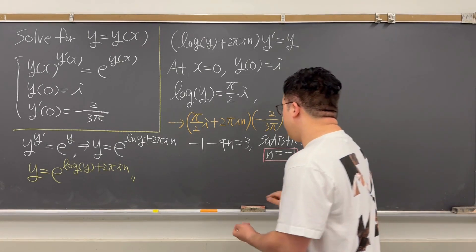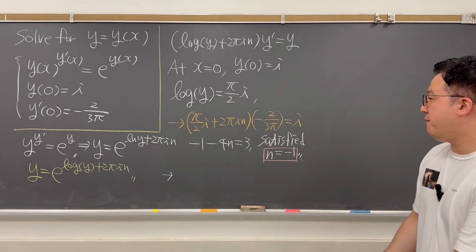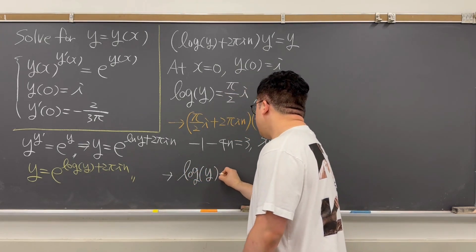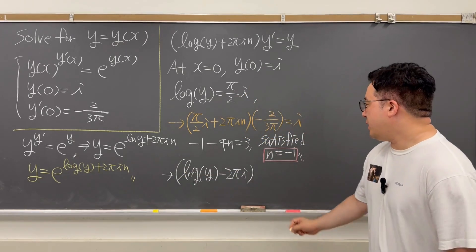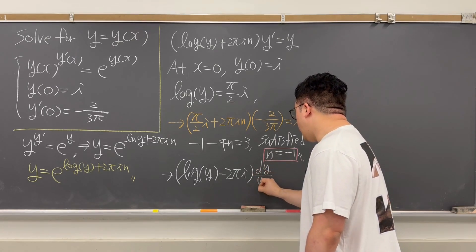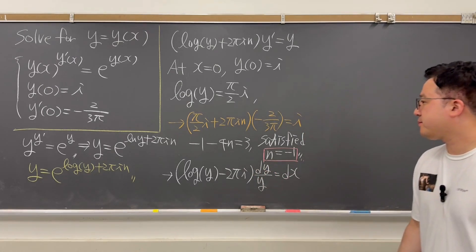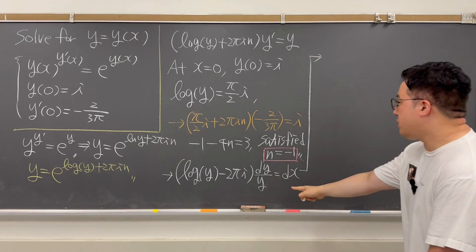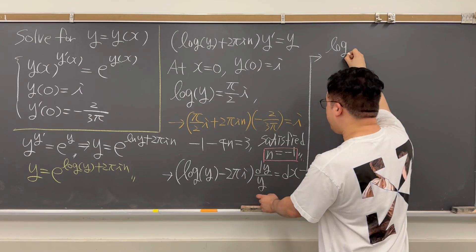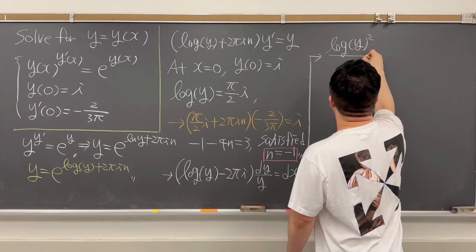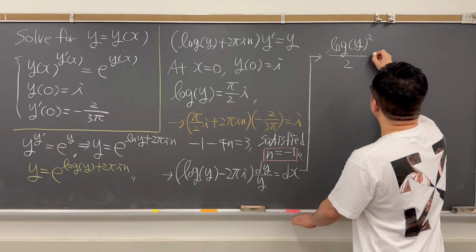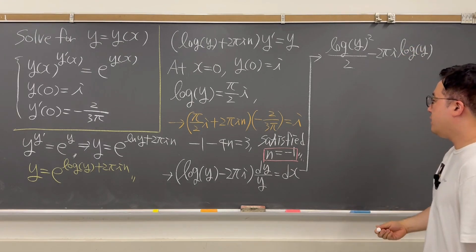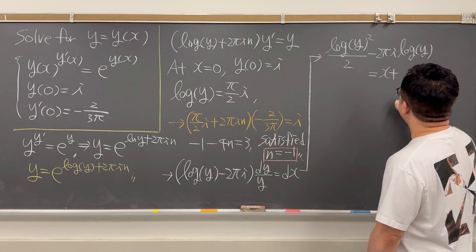Using n = −1, the ODE becomes (log(y) − 2πi) × (dy/y) = dx. Integrating both sides gives: log(y)²/2 − 2πi·log(y) = x + C.